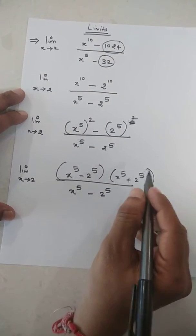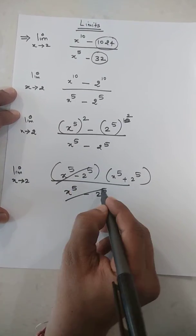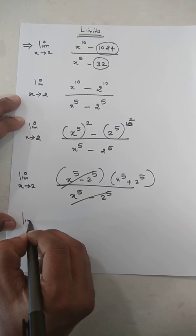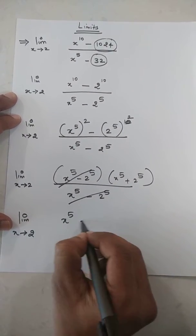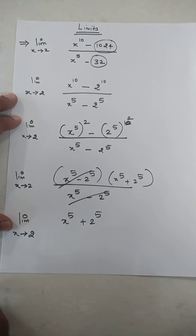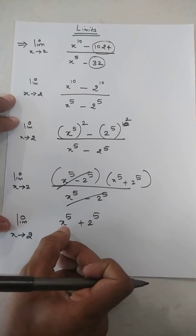So now denominator and numerator, this term, this term cancel out. So limit x tends to 2, x raised to 5 plus 2 raised to 5. So now replace the value of x that is 2 with here, x as 2.